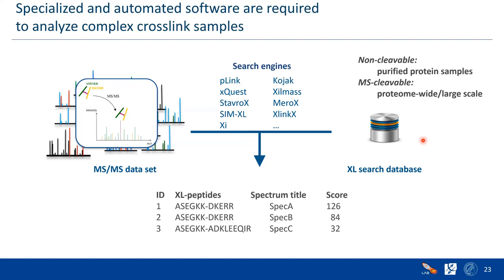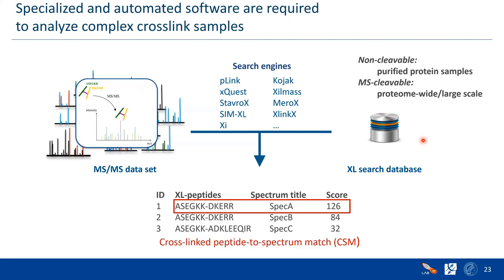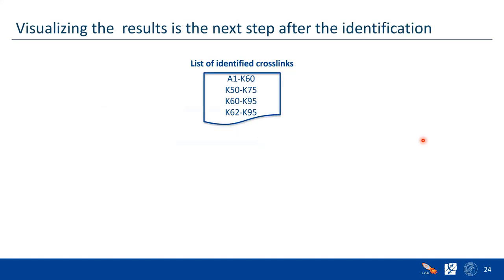To reach proteome-wide or large-scale analysis, we use MS-cleavable cross-linkers, which allow us to deal with this search space and scale up. We search against the database, and there are several existing tools, all different in their scoring engine and how they approach the database search space. In the end, what all these search engines produce is a list of cross-linked peptides matched to spectra — known as cross-link spectrum matches, or CSMs.